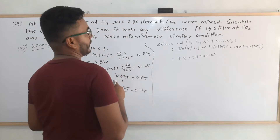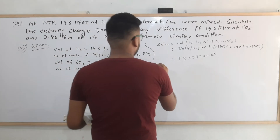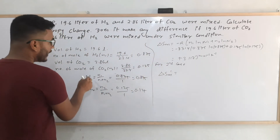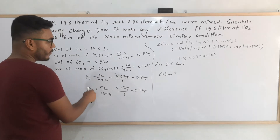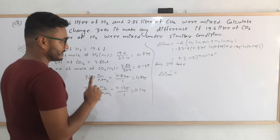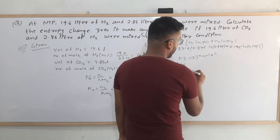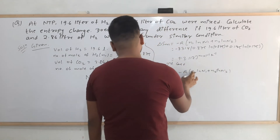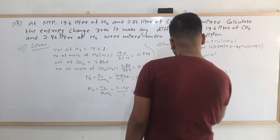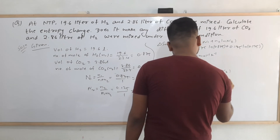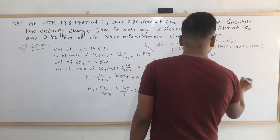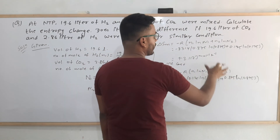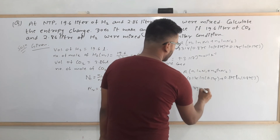Now, what if the volumes were interchanged? For the second case, let's call this ΔSₘ'. The only difference is that N1 becomes 0.125 and N2 becomes 0.875, because the volumes are swapped. So ΔSₘ' = −R(0.125 ln 0.125 + 0.875 ln 0.875). Only the data is interchanged, and you get the same value: 3.117 joules per mole per kelvin.